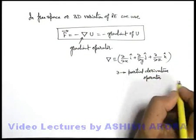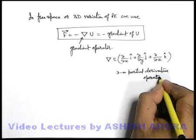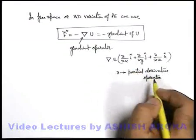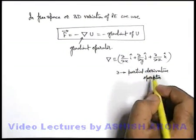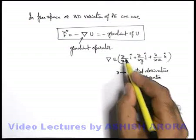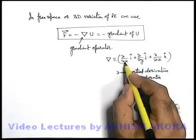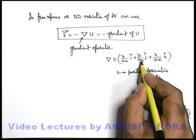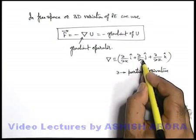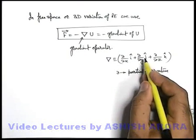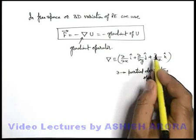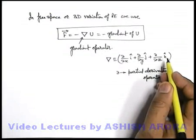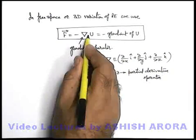Just like when you differentiate any function you use d over dx, here we use del over del x because it is the partial derivative operator — we differentiate with respect to x keeping y and z or any other variable constant. Similarly, del over del y means differentiation with respect to y keeping other variables constant, and del over del z is partial differentiation with respect to z keeping other variables constant. This is known as partial differentiation.